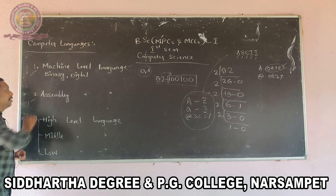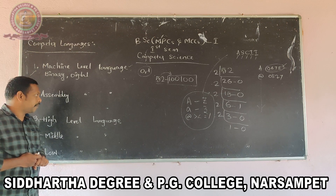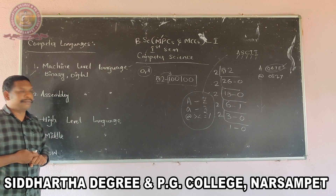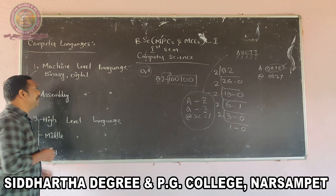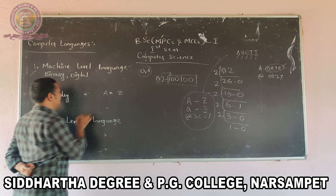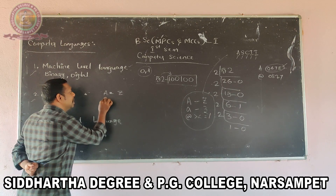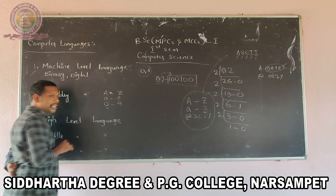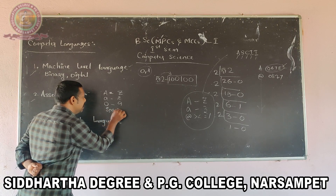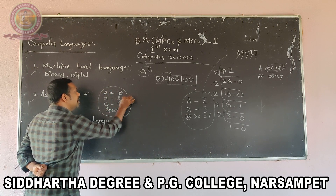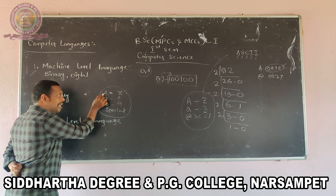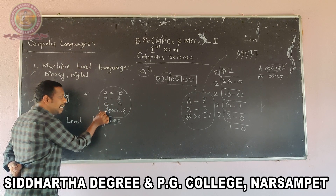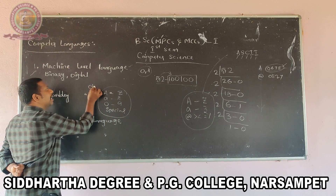Now the second type: assembly level language. Assembly level language means different types of characters are clubbed together into one language. Assembly level language uses capital letters A to Z, small a to z, numbers 0 to 9, and special symbols. This collection of characters is called a character set.